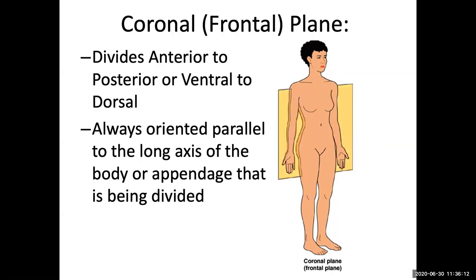Another plane that cuts across the long axis of the body is the coronal plane. The coronal plane cuts across the X axis, giving us a Z plane orientation — a depth orientation. This provides an anterior and posterior view within the appendages and organs, or a ventral and dorsal view within the body itself. We have to be careful about which term we use — anterior and posterior versus dorsal and ventral — and we'll look at that when we talk about orientation language.